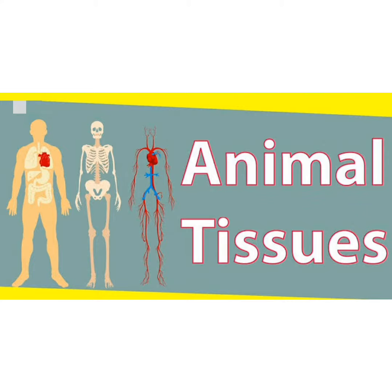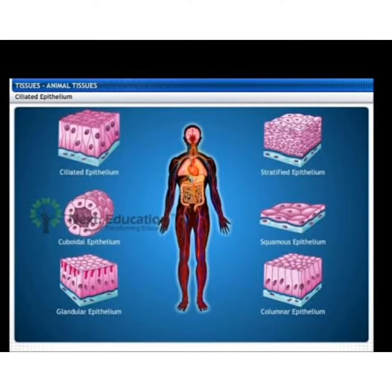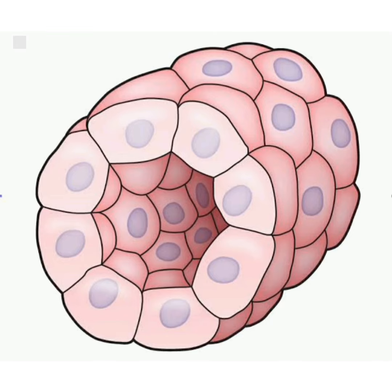The first tissue type is epithelial tissues. The covering or protective tissues in the animal body are epithelial tissues. Examples include the skin, the lining of the mouth, the lining of blood vessels, lung alveoli, and kidney tubules.